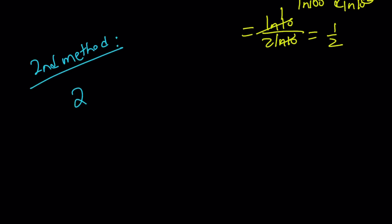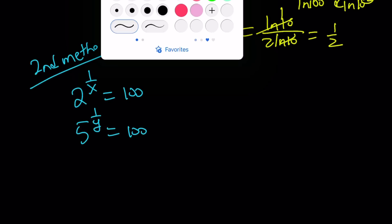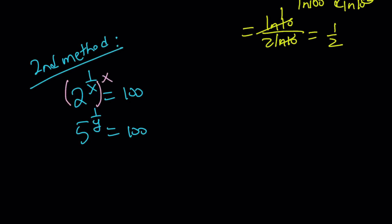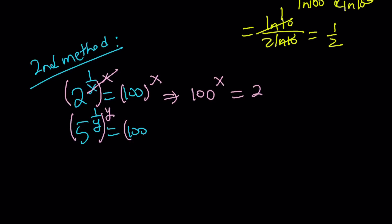For the second method, we set 2 to the power of 1 over x equal to 100, and 5 to the power of 1 over y equal to 100, as given. We raise both sides of the first equation to the power of x, so x cancels out and we get 100 to the power of x equals 2. Then we raise both sides of the second equation to the power of y, so y cancels out and we get 100 to the power of y equals 5. This is very nice.